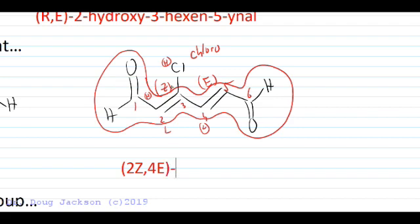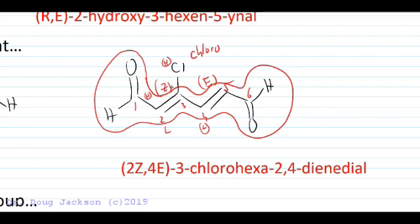And so we're going to start by putting the stereochemistry in here at the proper positions. That's a 2Z,4E. Looks like we've got a chloro, so a 3-chloro intersecting the circle. And then with two alkenes, we have a hexa-2,4-dienedial. Well, because of the dial, we need an E to separate the consonants N and D. So we put the E back in: 2,4-dienedial.